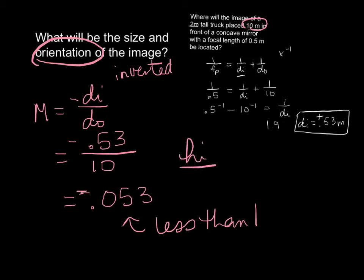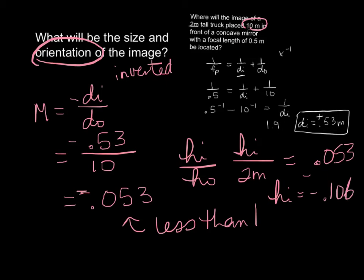And so when we do our HI over HO, our height of our image, we don't know what it is, our height of our object is 2 meters, and that's going to equal a negative 0.053. And so when we solve for HI, we get a negative 0.106 meters. And so what that tells us, the negative there tells us it's inverted.